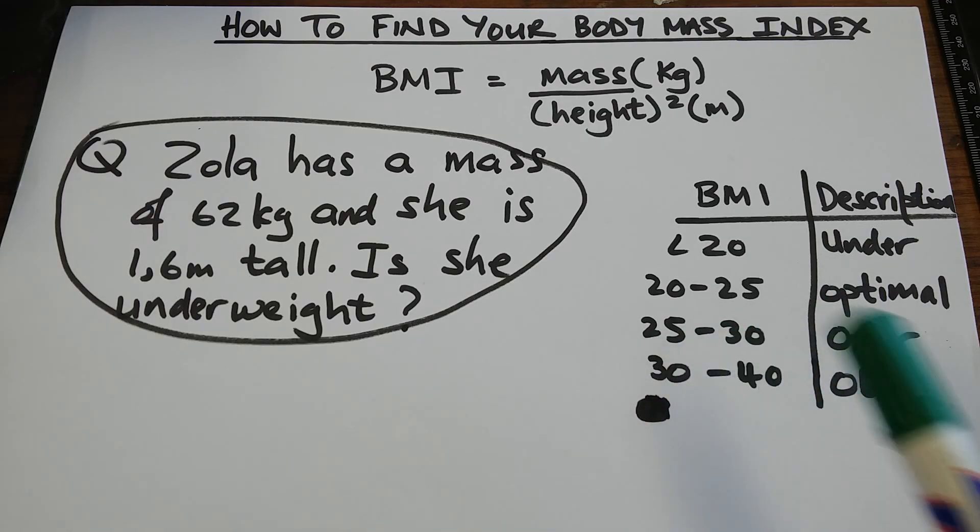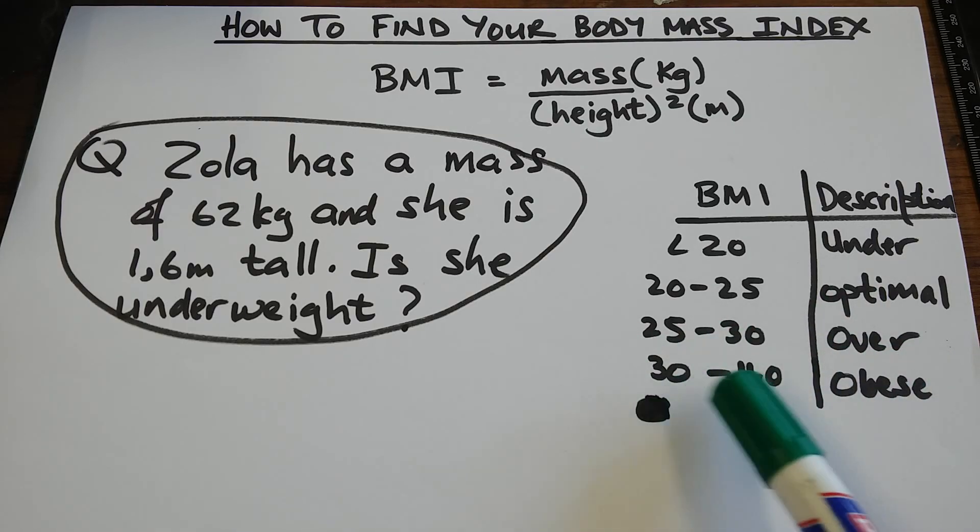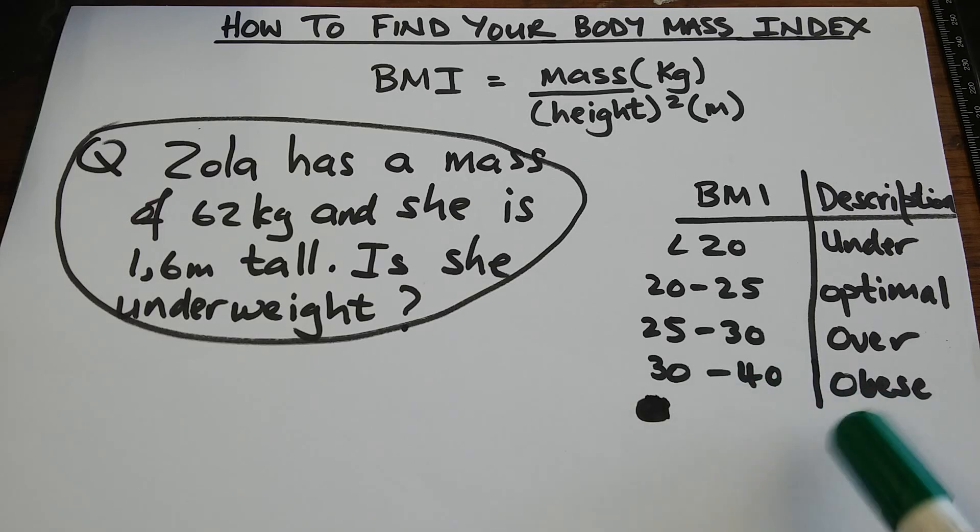Between 25 to 30, overweight. Between 30 to 40, we're going to say obese.